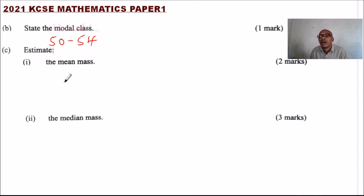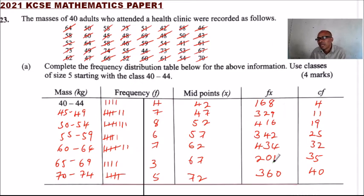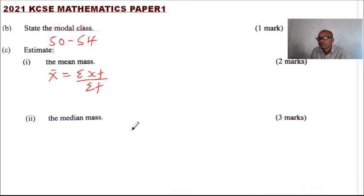Part C, number 1: estimate the mean mass. We normally say X-bar equals the summation of xf divided by the summation of f. If we add all the xf values we get the summation of xf, which equals 2250. The sum of the frequencies is 40, which we have already been given. So the mean mass is 2250 divided by 40, which gives 56.25 kg.